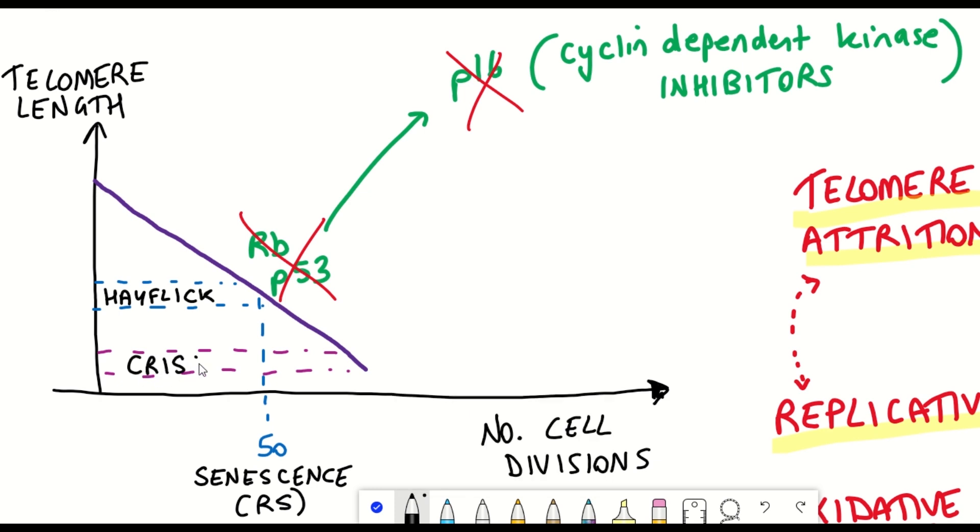However, mutations in the genes encoding these proteins could enable a cell to escape senescence and continue to replicate, which could lead to tumor development.